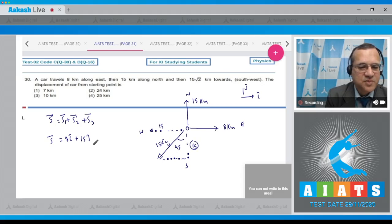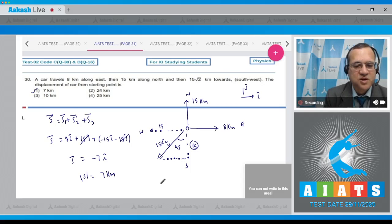So third displacement is minus 15 i and minus 15 j. You look, this cancels out, so 8 minus 15 is minus 7 i. So net displacement is minus 7 i, which is 7 kilometers west. In value, this is equal to 7 kilometers. Answer to this question is first option.